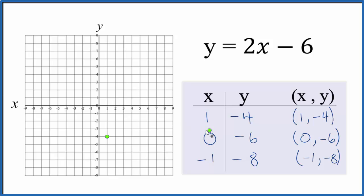When x is 0, y is negative 6. So we go to x is 0, we go down to negative 6. And finally, when x is negative 1, we have y is negative 8. So negative 1 down to negative 8.